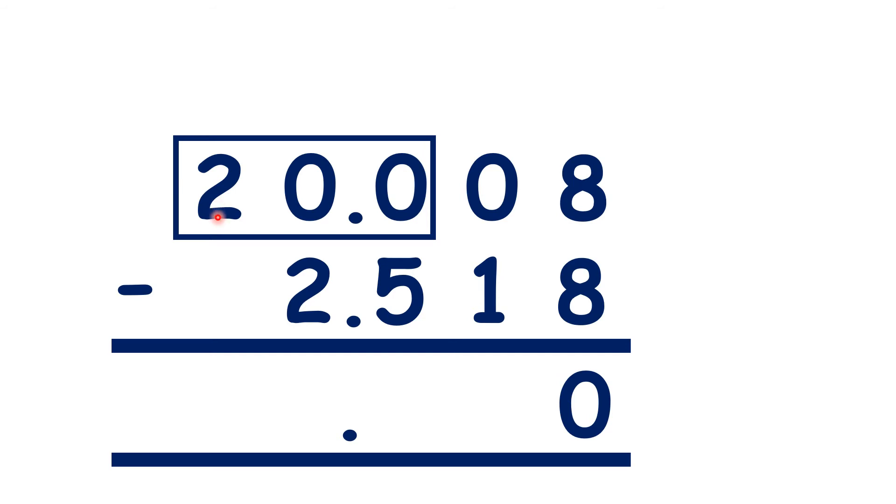Most teachers will want you to do this in a different way, but what I like to do is draw a rectangle like I have here, and then change the digits. So 200 becomes 199, but we still have our decimal point between our units and tenths.